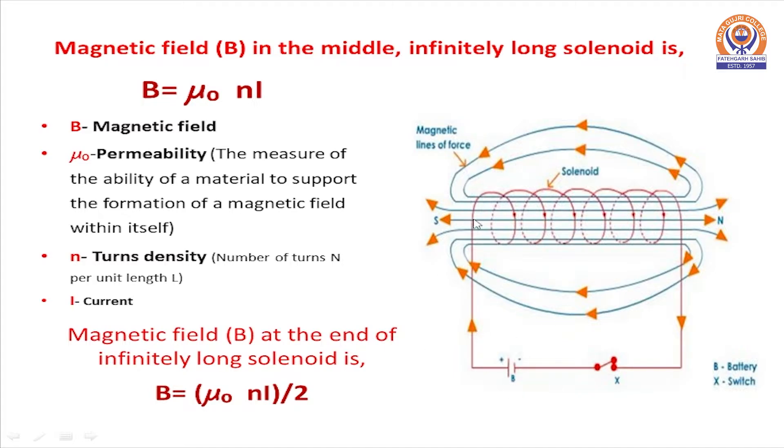Magnetic field at the end of infinitely long solenoid is half of the magnetic field at the middle, that is B equals mu naught n i by 2.